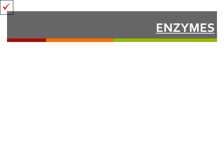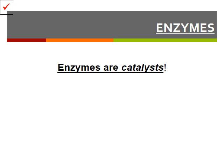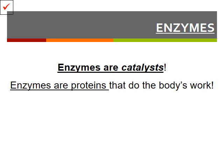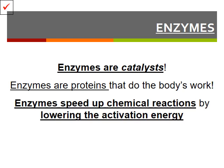Something that can help make this process smoother are enzymes. Enzymes are what we call catalysts because they cause change. Enzymes are proteins that help do the body's work for it. They speed up chemical reactions by lowering the activation energy needed to get the reaction going, which increases the speed of the reaction, meaning more chemical reactions can take place and you get more product.